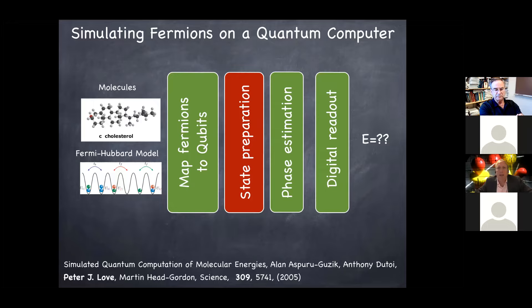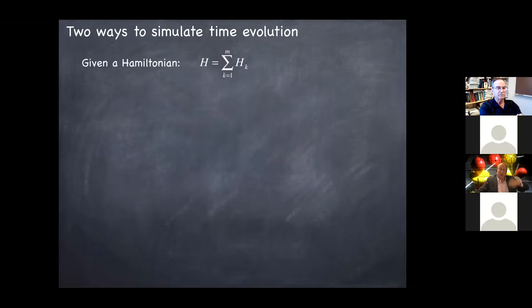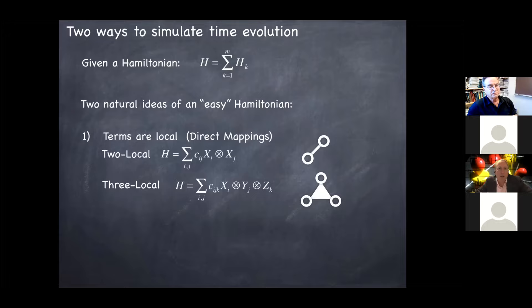Another question is, in order to have an efficient simulation, you need to be able to represent the Hamiltonian of your system in some efficient way. I mean, if you think about the arbitrary Hamiltonians of N qubits, those are 2 to the N by 2 to the N Hermitian matrices. So if there's no structure to that, you can't even write the thing down in anything less than an exponential amount of time. So there are two natural ideas of an easy Hamiltonian, meaning a Hamiltonian you can use as an input to some calculation.